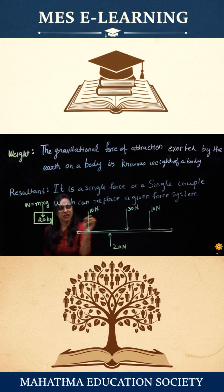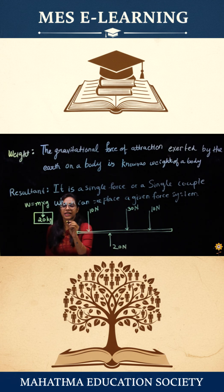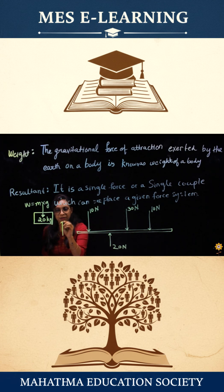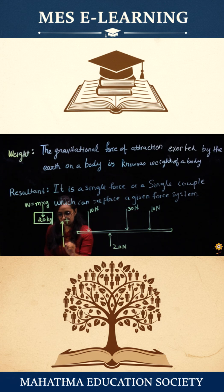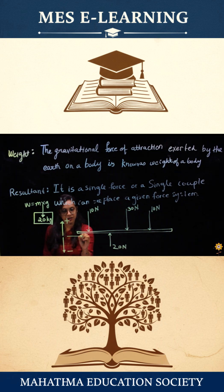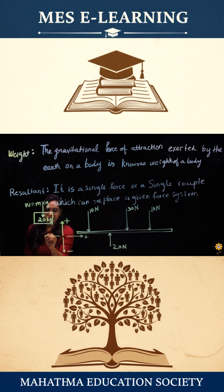If we consider the same system, we should first know what is the sign convention for it. If any force is going upward, it would be considered to be a positive force. If it is going downward, it is in the negative direction. If it is in the forward direction, it is considered to be positive, and if it is in the backward direction, it is considered to be negative.